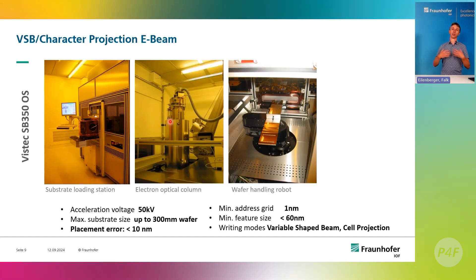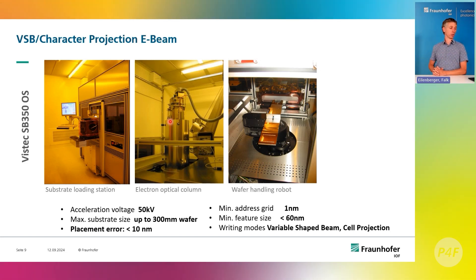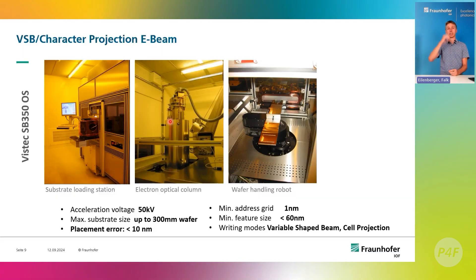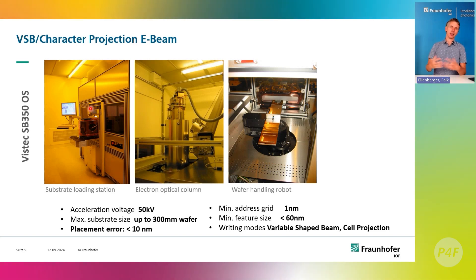The centerpiece of our nanostructuring facility at Fraunhofer IOF in Jena is a large-scale electron beam writing machine derived from a semiconductor industry instrument. It sits in a clean room and can create nanostructures on wafers up to 300 millimeters in diameter. We're currently installing upgrades to also handle 300 millimeter squares — which is quite large for meta-optical elements.